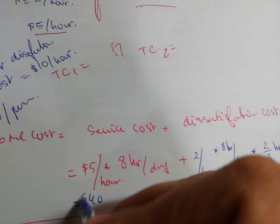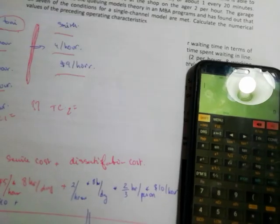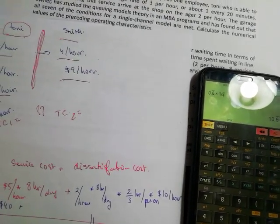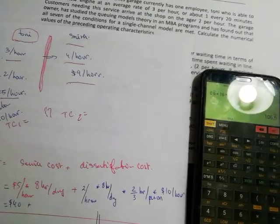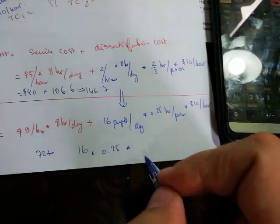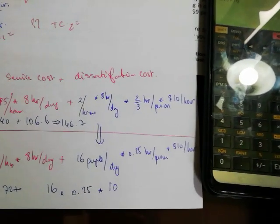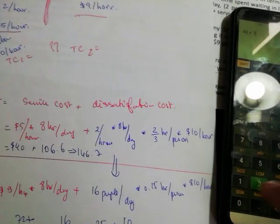We calculate which one is more feasible. Here we have 40 dollars plus—let me get the calculator—two-thirds times 16 times 10 equals 106.6. So the total is 106.6 plus 40, which equals 146.7.